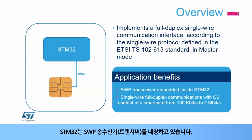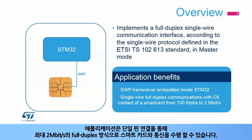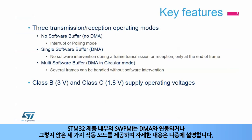The STM32 embeds the SWP transceiver. Applications benefit from the easy single pin connection to a smart card for full duplex communications up to 2 megabits per second. The SWPMI inside STM32 products offers three operating modes, with or without DMA, which are explained in detail later on.